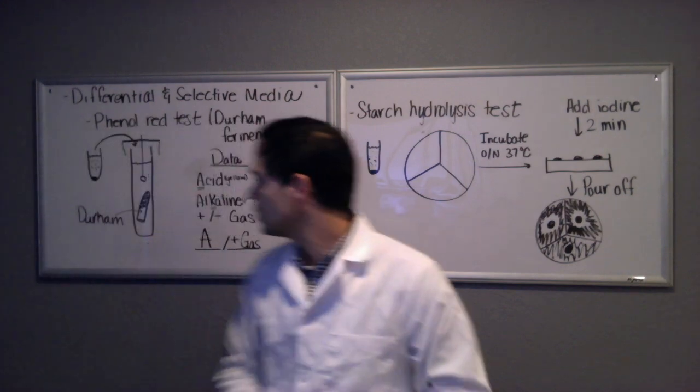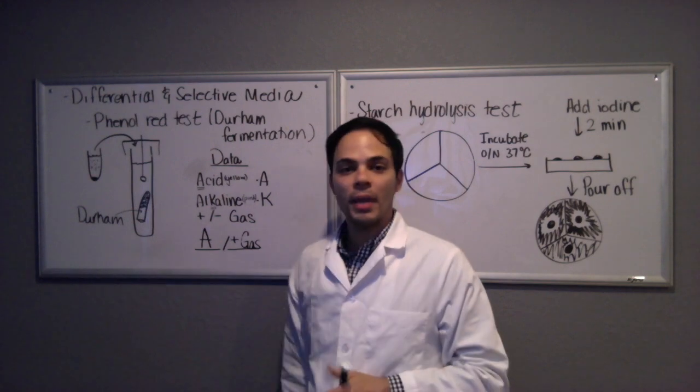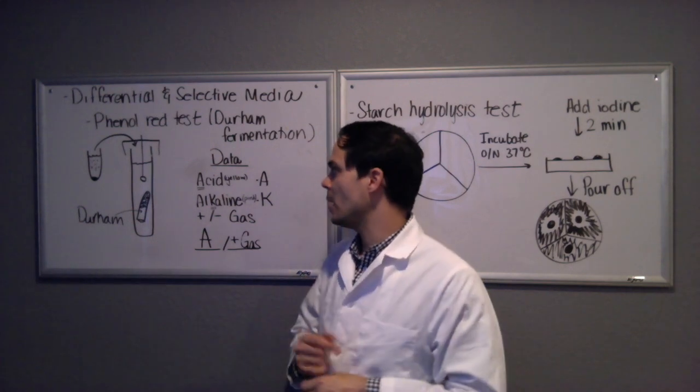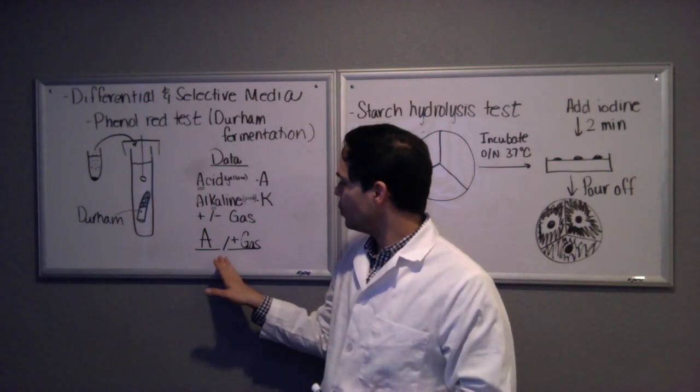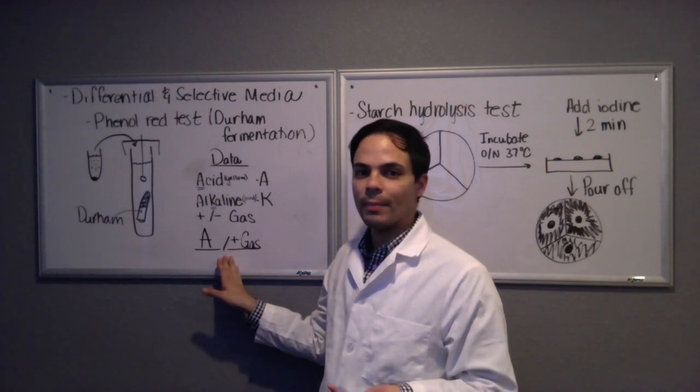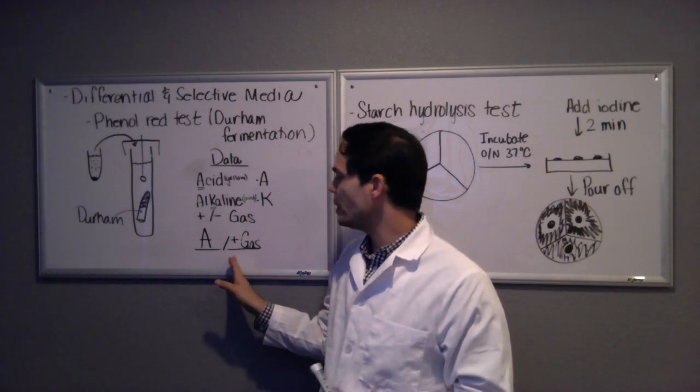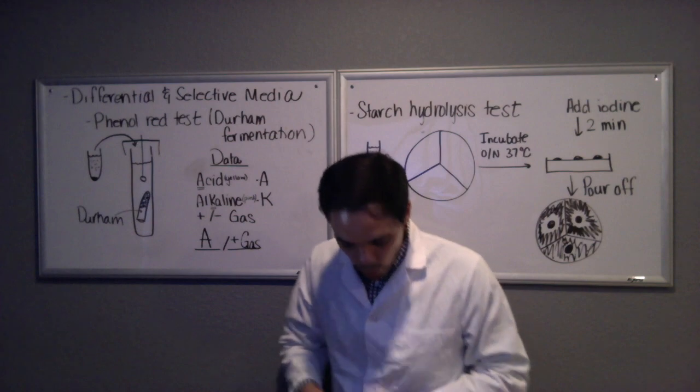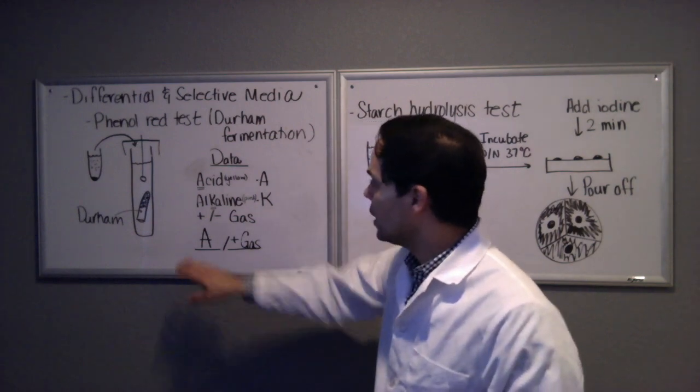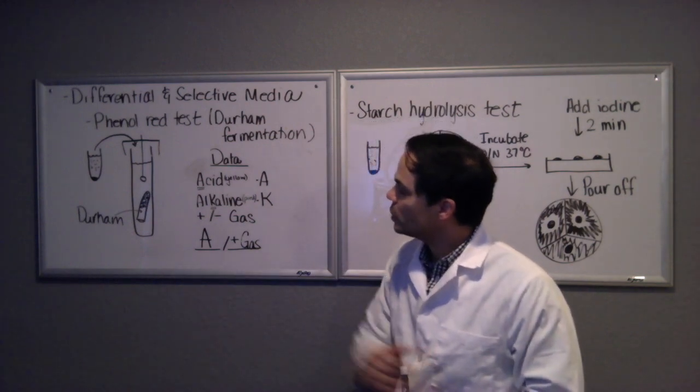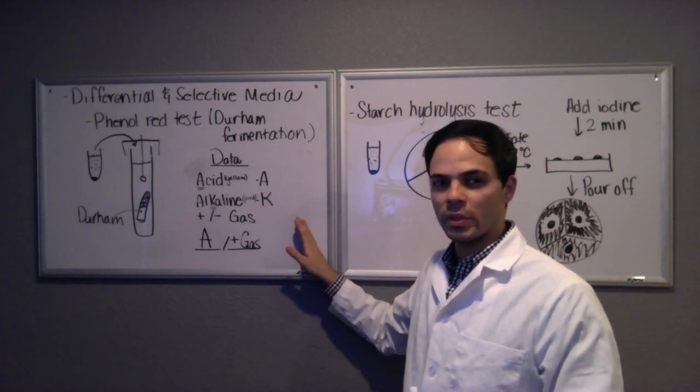Again we're comparing the color and the presence or absence of gas to our negative control tube, our un-inoculated tube. Something that would do this would be like E. coli, which is a strong fermenter and does produce gas when it ferments the lactose. This test is really useful for differentiating members of the Enterobacteriaceae and other microbes as well.